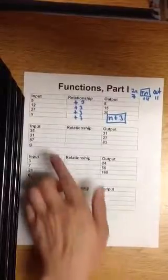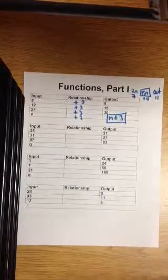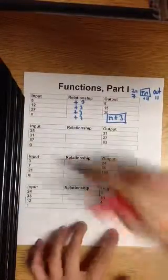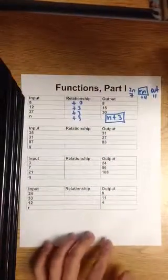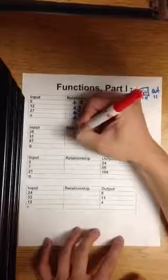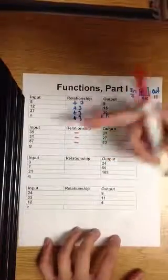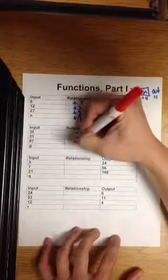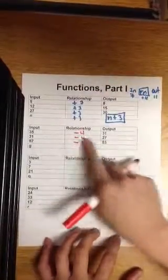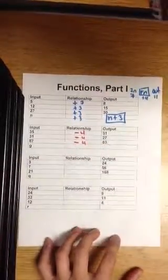What's the relationship between 35 and 31? 31 to 27. 87 to 83. It's getting smaller, just barely smaller. So I think it's subtraction. I know it's not division because you can't divide anything evenly. Minus 4, I think. 31 minus 4 is 27. 87 minus 4. It is minus 4.